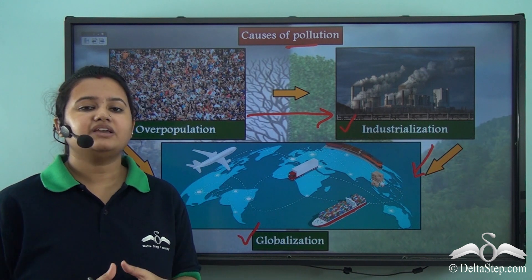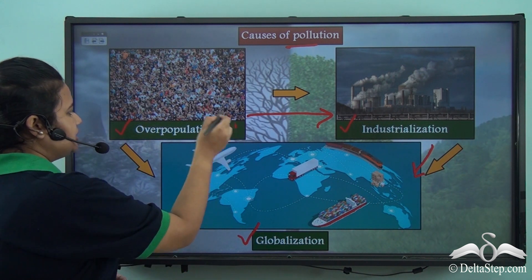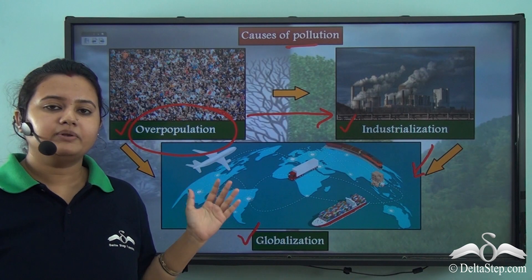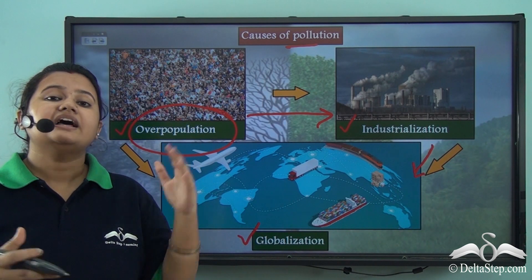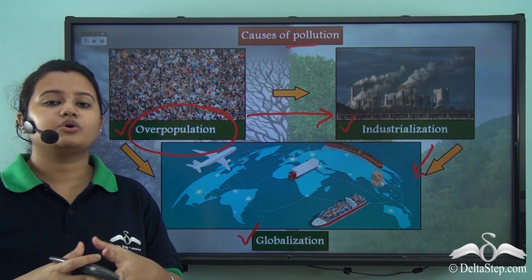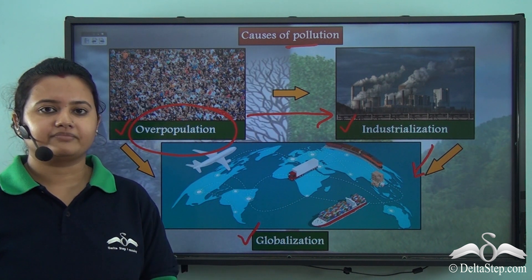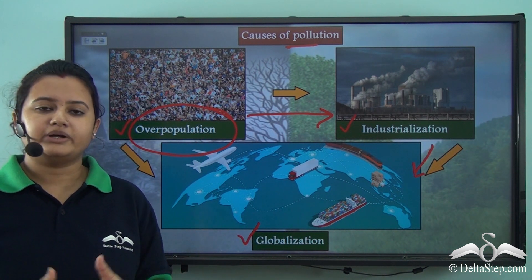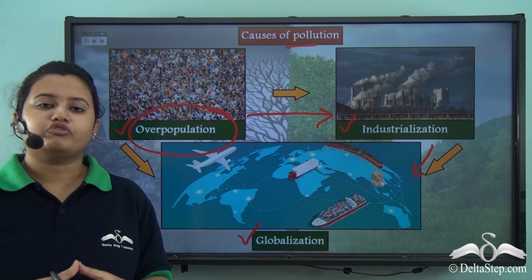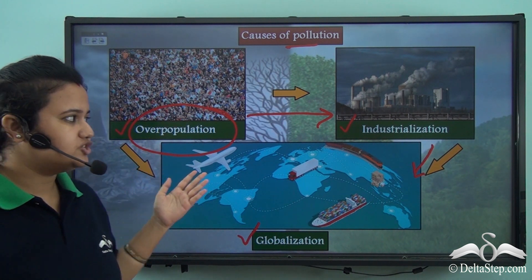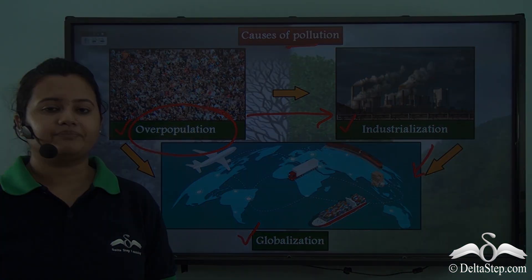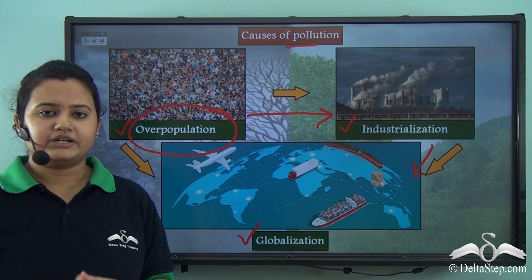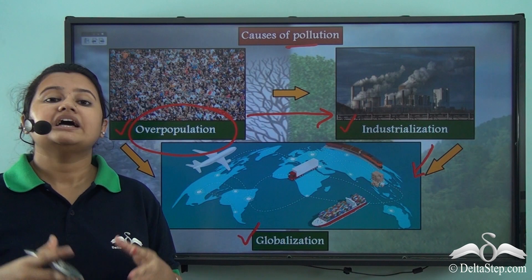Overpopulation is the root cause of everything. If the problem of overpopulation can be tackled, then the rest of the problems will also be resolved. So in today's video we discussed the various causes of pollution. The main causes of pollution are overpopulation, industrialization and globalization. In our next video we will discuss various types of pollution, starting with air pollution.